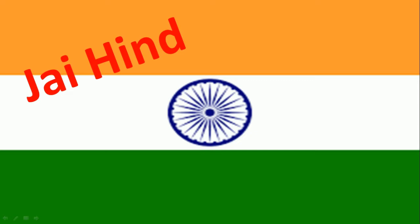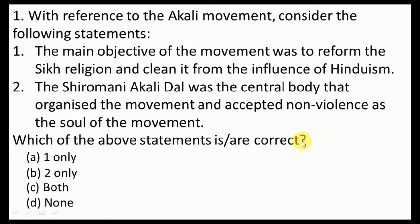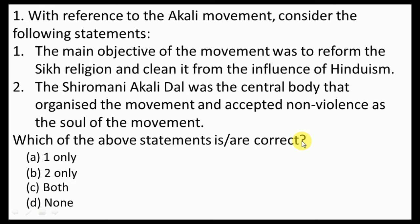Without wasting much time, let's start. The first question of this test series: With reference to the Akali movement, consider the following statements. One: The main objective of the movement was to reform the Sikh religion and clean it from the influence of Hinduism. Two: The Shiromani Akali Dal was the central body that organized the movement and accepted non-violence as the soul of the movement. The correct option is statement two only.